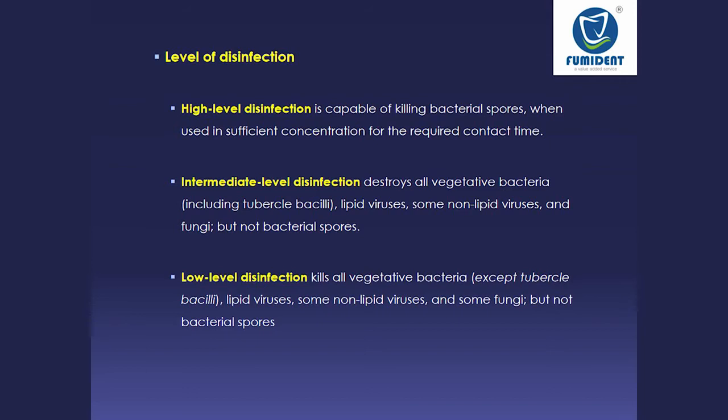Intermediate-level disinfectants destroy all vegetative bacteria including tuberculous bacilli, lipid viruses, some non-lipid viruses, and fungi, but not bacterial spores. Low-level disinfectants kill all vegetative bacteria except tuberculous bacilli, lipid viruses, some non-lipid viruses, and some fungi, but not bacterial spores. That is the key difference between the three levels of disinfection.